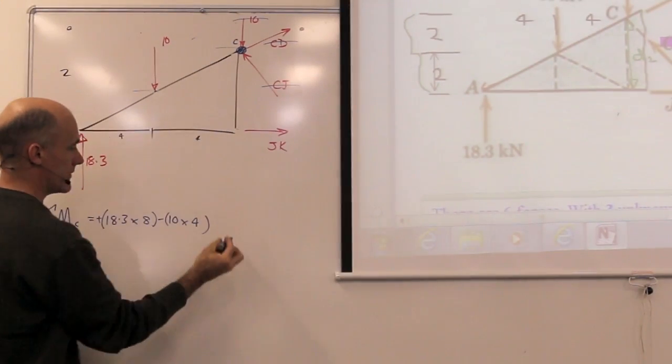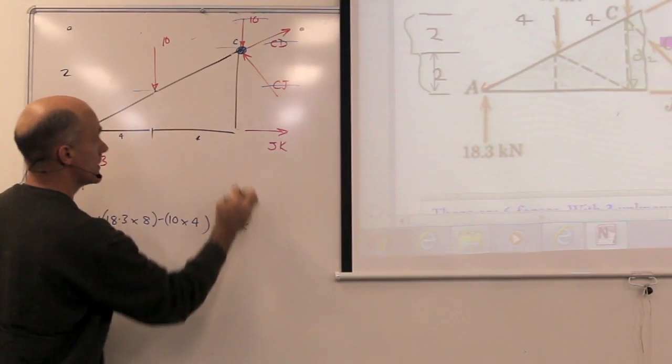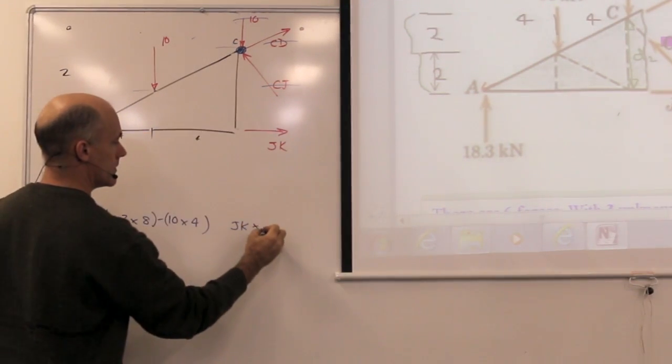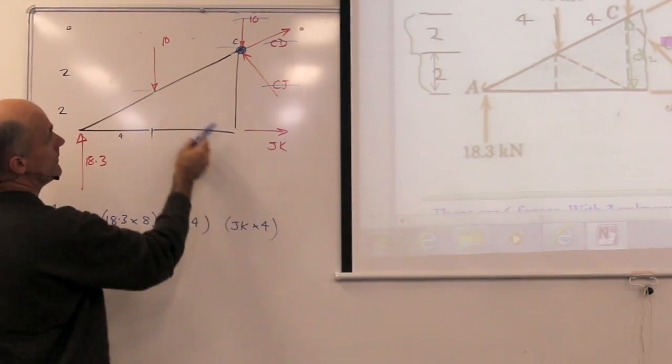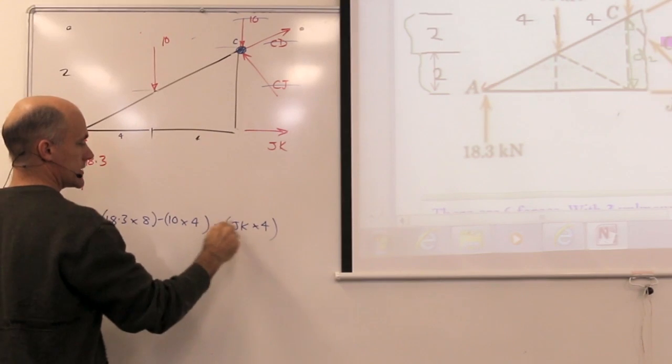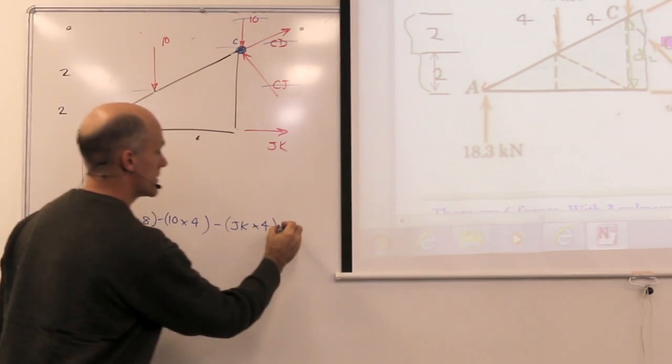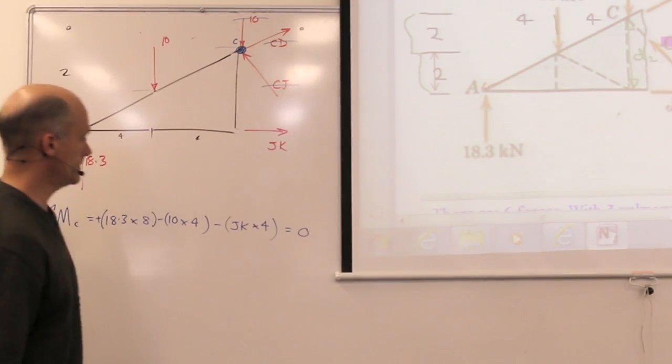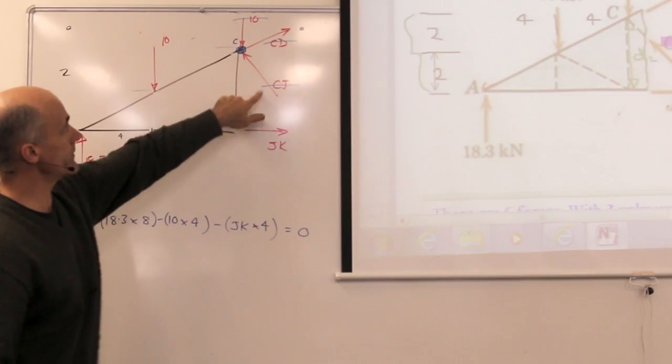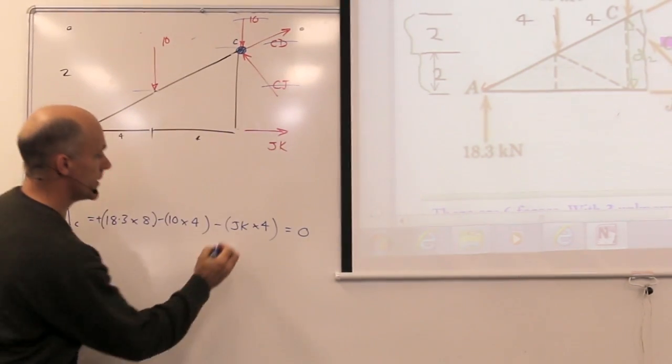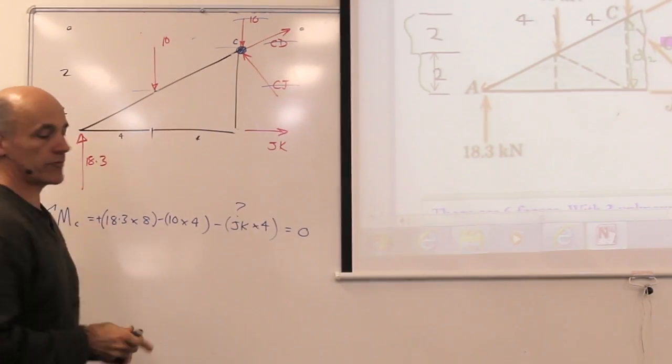Those three not included, and we have JK. The distance there is 4. And that's causing anticlockwise, negative. Equals 0. So this moment equation has none of these three forces in it. It only has one unknown, this one here, and that's the one we're trying to solve.